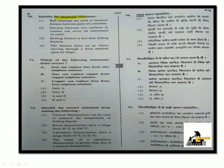Next question: Identify the incorrect statement. The first statement says ball bearings are used to increase friction between the parts of a machine. This statement is incorrect because ball bearings actually decrease friction, not increase it. So this is the incorrect statement.